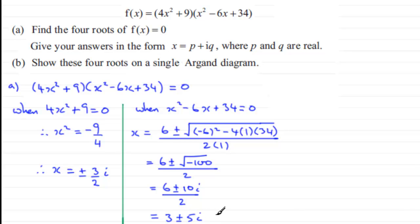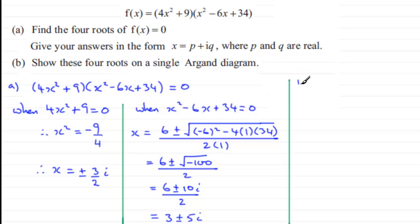Notice that in each pair of roots, one root is the complex conjugate of the other. Now for part (b), we're asked to show these four roots on a single Argand diagram. Let's set up our axes — the imaginary axis going vertically and the real axis horizontally.